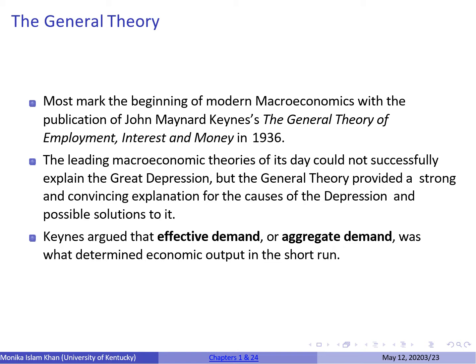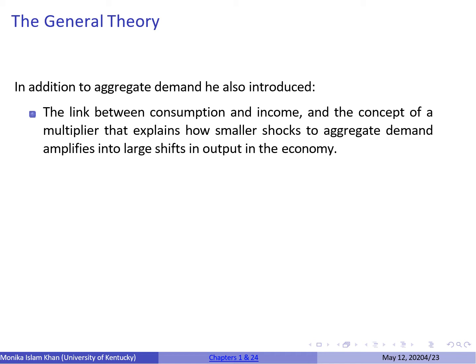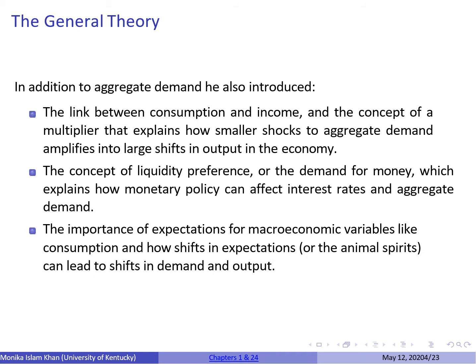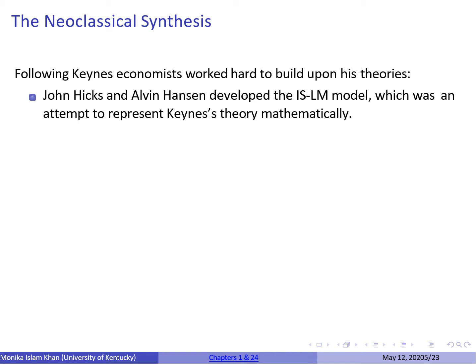Because Keynes provided the framework that explained the economics of the Great Depression, his insights dominated macroeconomic theory for decades. In addition to his theories on aggregate demand, he made important contributions: first, he introduced the link between consumption and income and the concept of the multiplier effect, which explains how smaller shocks to aggregate demand amplify into larger shifts in output. Second, he introduced liquidity preference, explaining how monetary policy can affect interest rates and aggregate demand. Third, he introduced the importance of expectations — for example, if people expect incomes to increase in the future, the level of consumption today is likely to increase, thus increasing output.